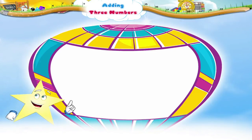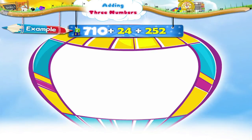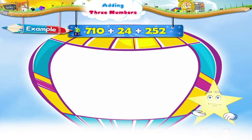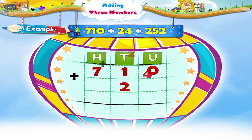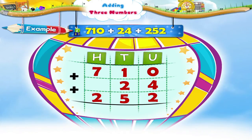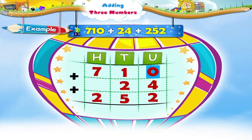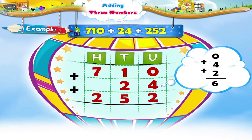Now let us look at another example: seven hundred and ten plus twenty-four plus two hundred and fifty-two. Will you try solving this? You arrange the numbers vertically, then you add the digits in the units place. Zero plus four plus two gives six. Six is written in the units place of the sum.